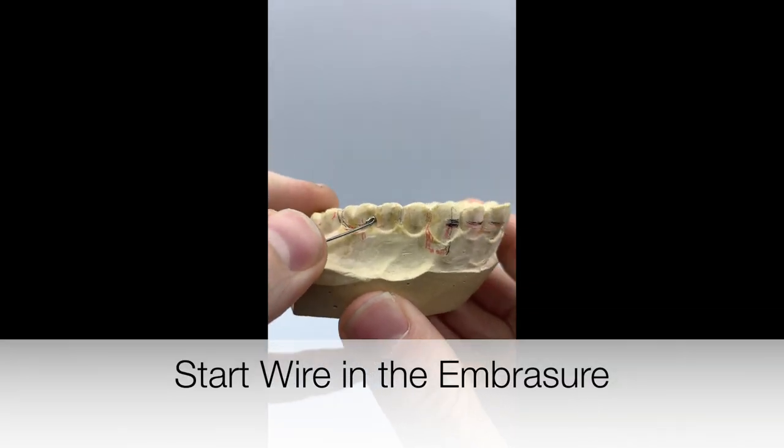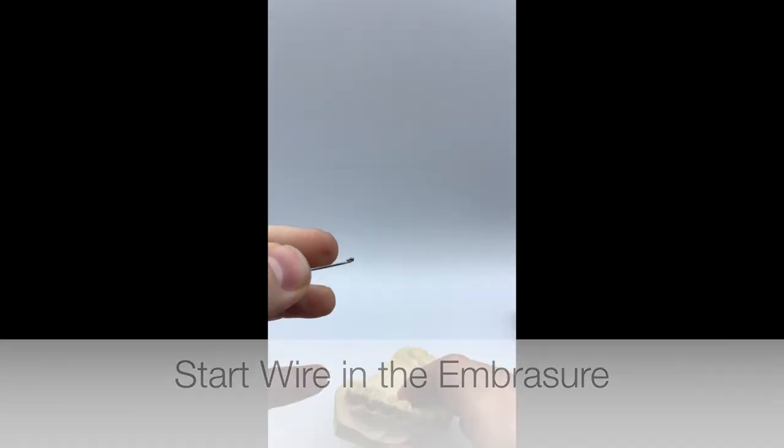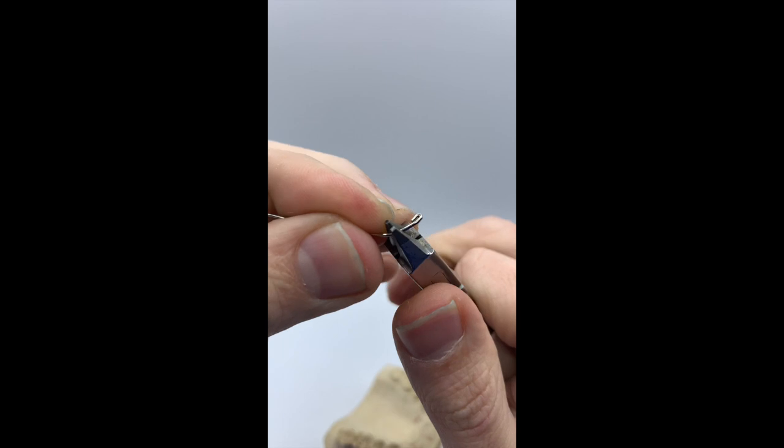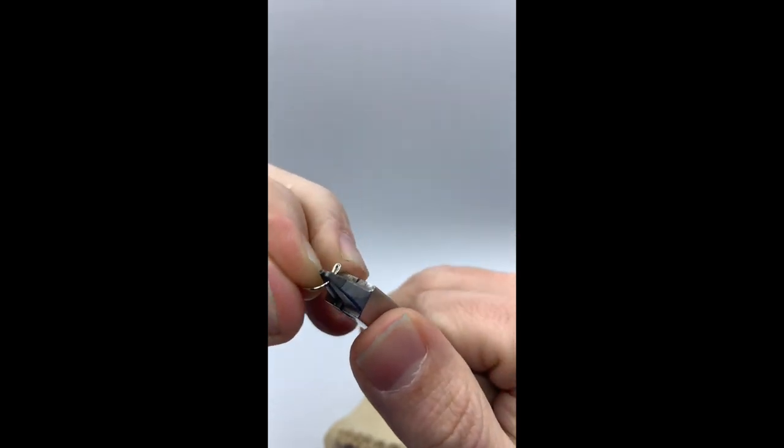When you bend your wire you want to start in the mesial embrasure of the first molar. And with a short series of bends, make a short arch following the buccal contour of that first molar.